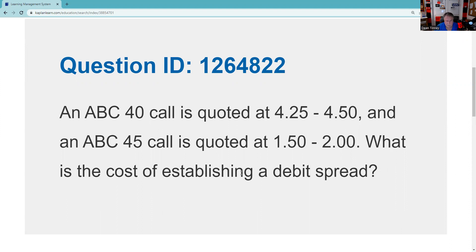An ABC 40 call is quoted at four and a quarter / four fifty, and an ABC 45 call is quoted at one and a half / two. What is the cost of establishing a debit spread?